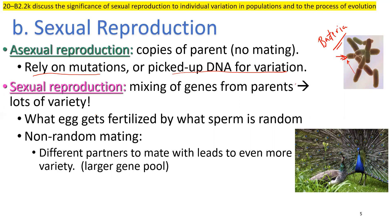When we have sexual reproduction, that's essentially a mixing of genes from parents. There's competition here — you can see this in the peacocks. They're going to compete for the hens, so mating is not random because of competition. Only certain peacocks get to mate with the hens. Different partners mating leads to even more variety, because you're mixing the gene pool even more between two different members of the same species. So sexual reproduction and mutation are the sources of variation in a population.